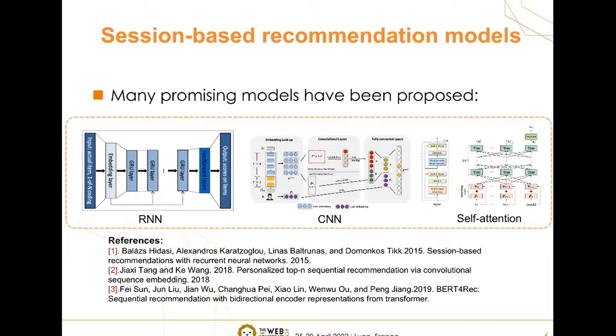In the past few years, many promising models have been proposed based on different neural architectures, such as RNN, CNN, and the self-attention mechanism. Actually, these works aim to better design F, as mentioned before.